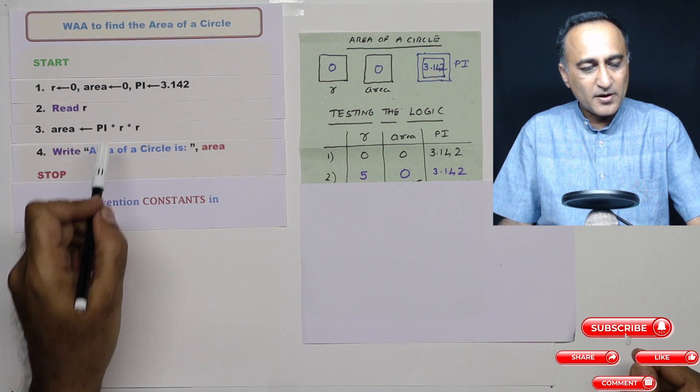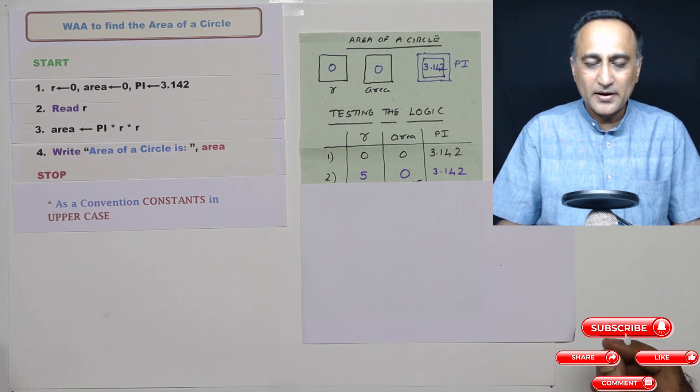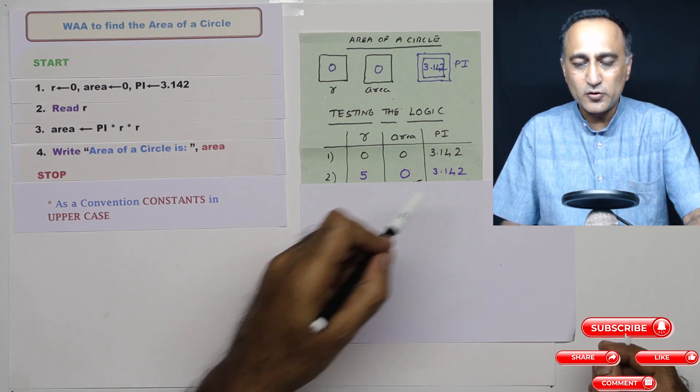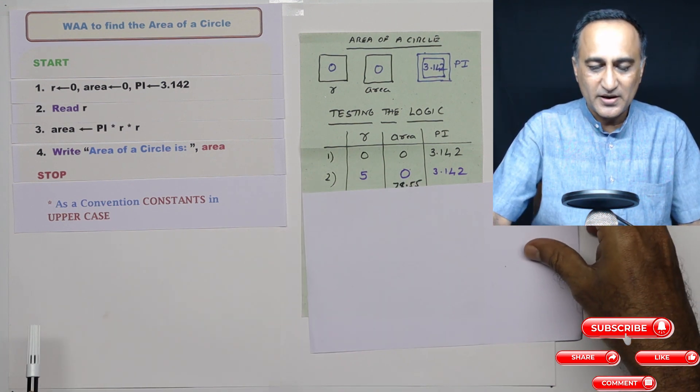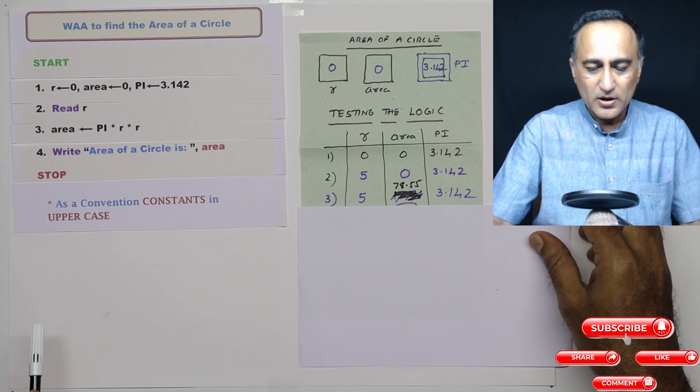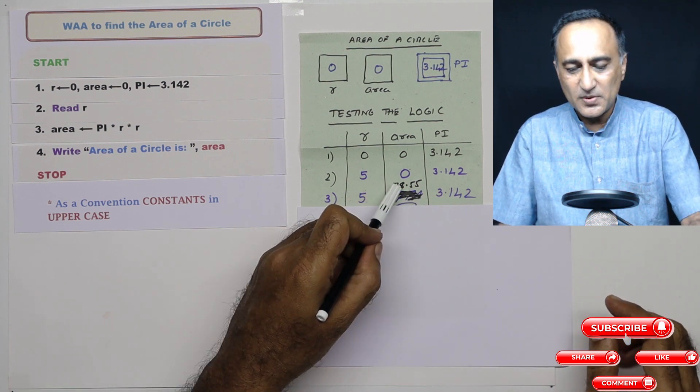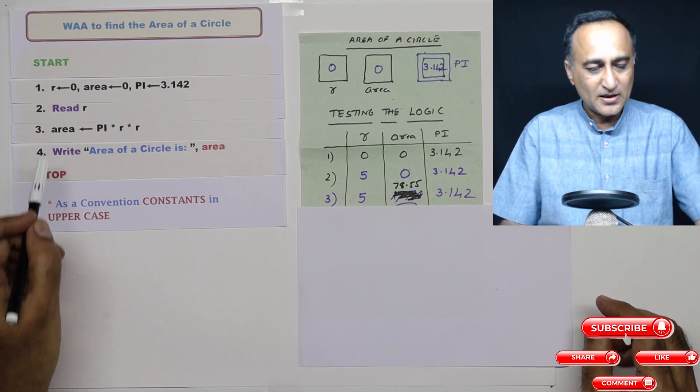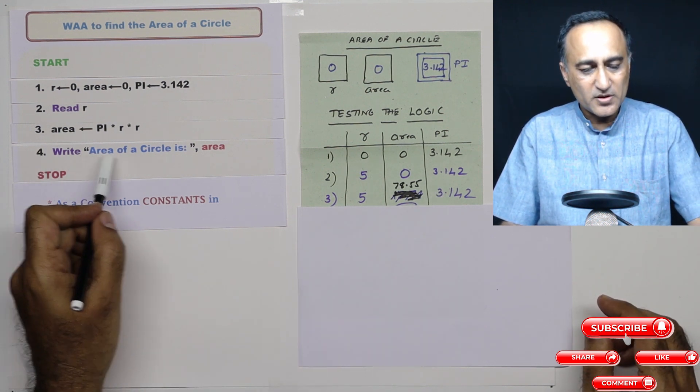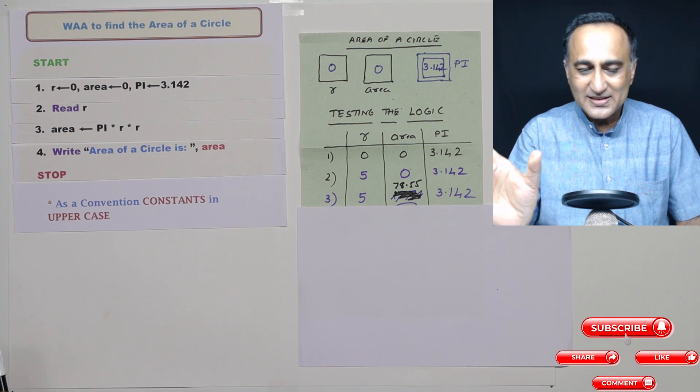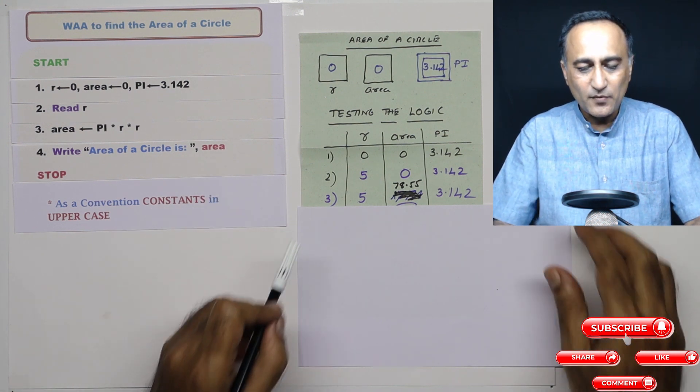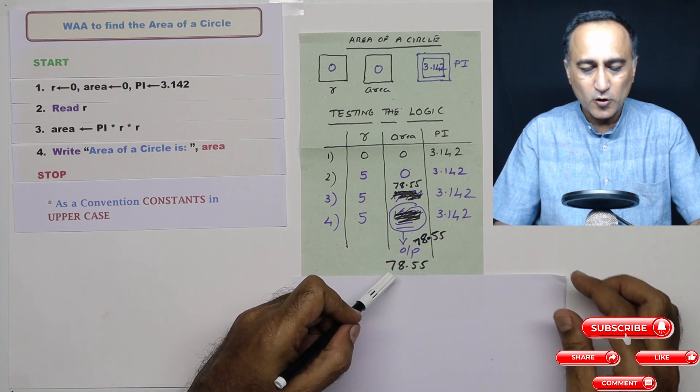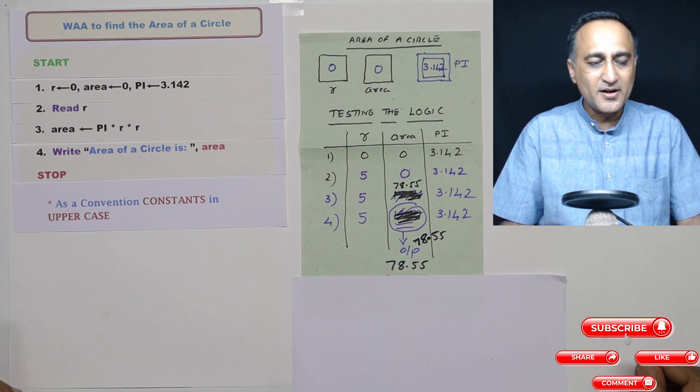In step number three, I am calculating area as pi into R into R. So this is five into five is 25, 25 into 3.142 is going to be around 78 something. So here what happens is R doesn't change, but area changes to 78.55, pi remains as it is. In the fourth step, whatever is in this double quotes is going to come as it is on the screen. And the area value is going to be displayed as 78.55, or on the output screen, you're going to see 78.55.